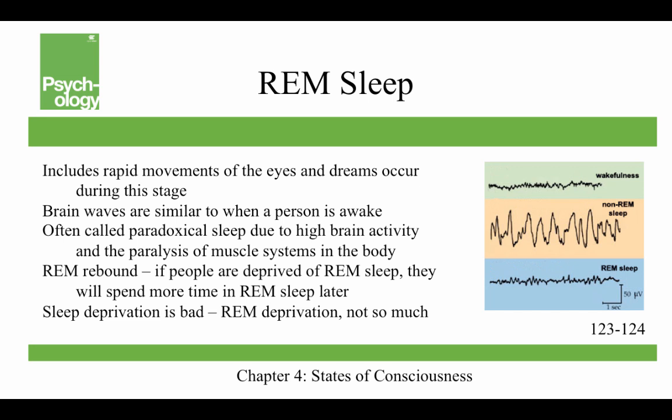REM sleep includes rapid movements of the eyes and dreams. Brain waves during REM sleep are similar to those of a person who is awake. It's often called paradoxical sleep due to the high brain activity combined with paralysis of muscle systems in the body. You can also experience REM rebound — if people are deprived of REM sleep, they will spend more time in REM sleep the next night. This suggests that REM sleep, like regular sleep, is homeostatically regulated.